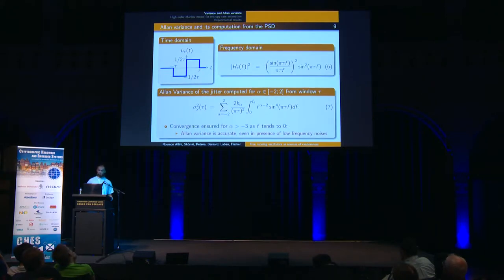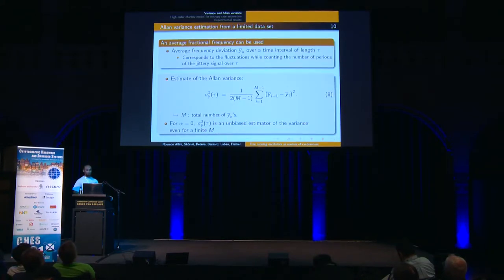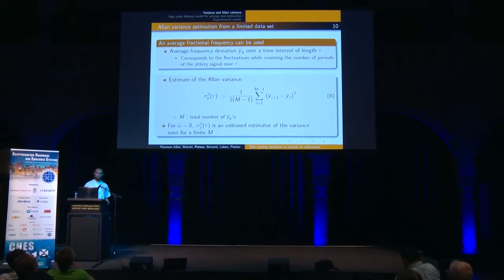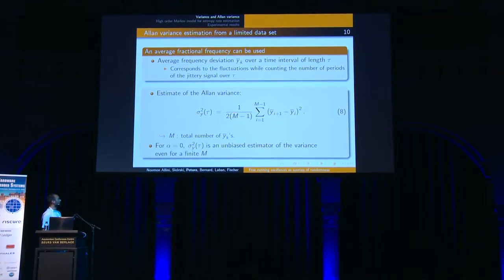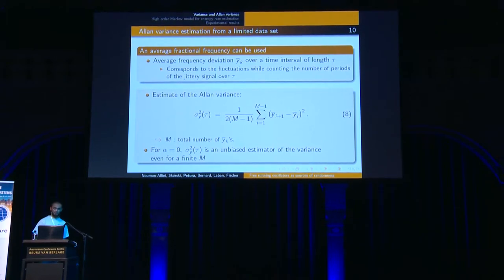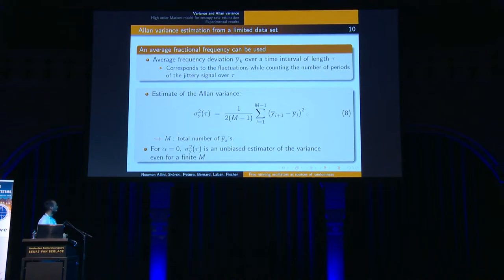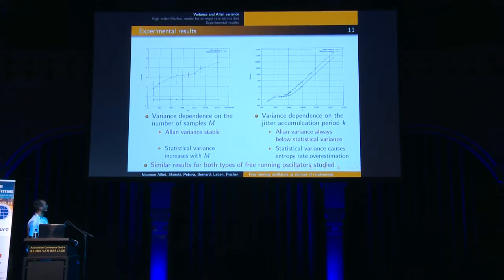Luckily, there are other types of variance, such as Allan variance, which is computed from the first-order differences of values. This variance is ensured to converge even for low-frequency noises, so it provides accurate estimation even when these low-frequency noises are affecting the signal. Since variance and all statistical measures are accurate only when computed from an infinite dataset, we need to compute them from a limited set of m samples. The statistical variance tends to diverge when changing this value, which is not the case for Allan variance. As seen in experimental results, Allan variance stays stable regardless of the number of samples used to compute it.